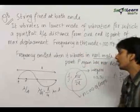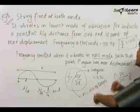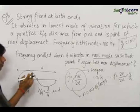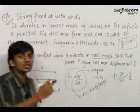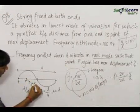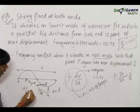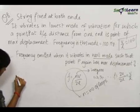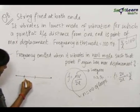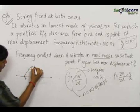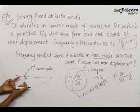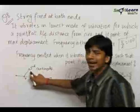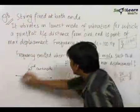For the second part, we use this information to find the frequency when it vibrates in the next mode such that point P again has maximum displacement. For P to have maximum displacement again, it must again be an antinode. Since we need just the next mode, P must be the second antinode — if it were the third antinode, there would be more loops than in the second-antinode case.